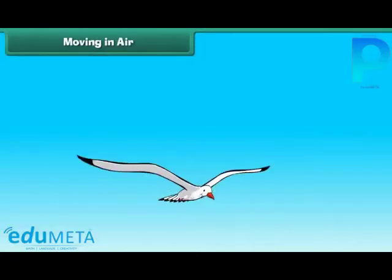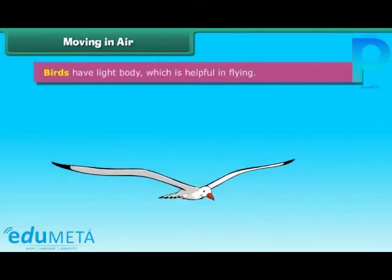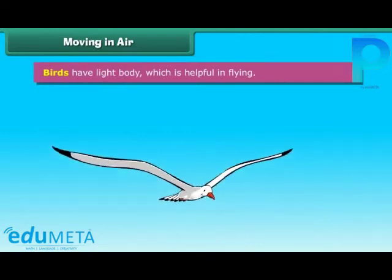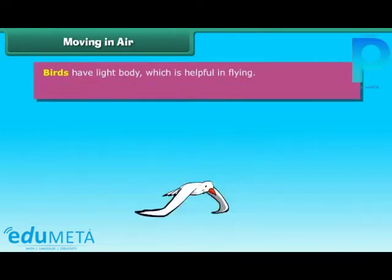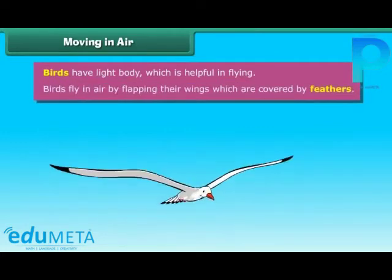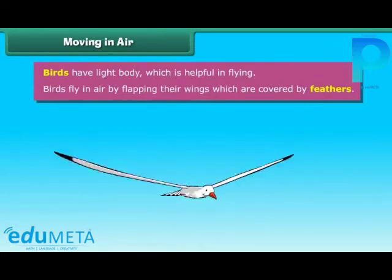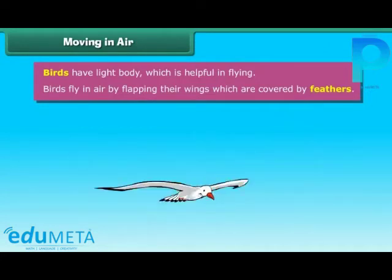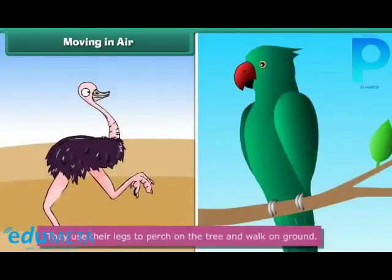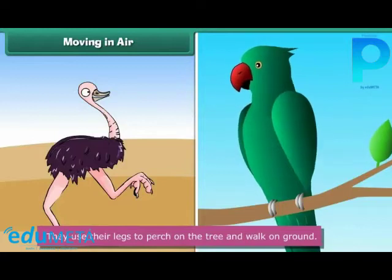Moving in air. Birds have a light body which is helpful in flying. Birds fly in air by flapping their wings, which are covered by feathers. They use their legs to perch on trees and walk on the ground.